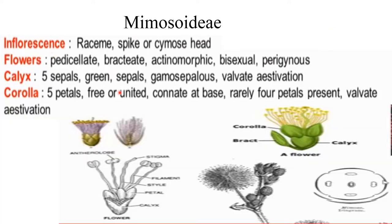Inflorescence: either raceme, spike, or cymose head. Flower: pedicellate, bracteate, actinomorphic, bisexual, and perigynous. Calyx: 5 sepals, green, gamosepalous, valvate aestivation. Corolla: 5 petals, free or united, connate at base. Rarely 4 petals present. Valvate aestivation.